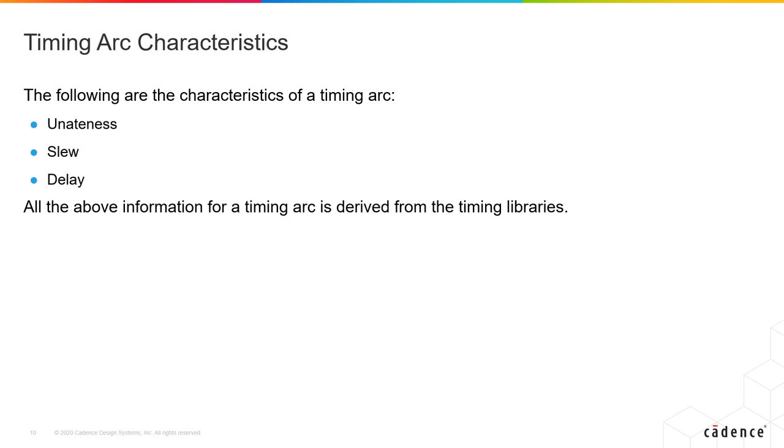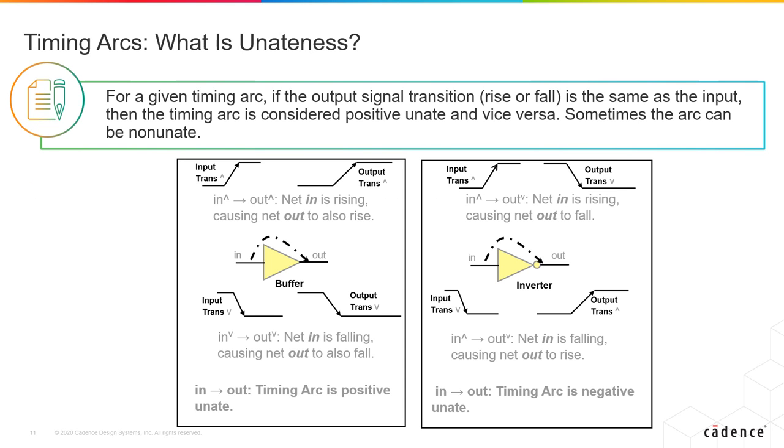Let's look at what each of these means and what is their purpose. U-nateness is a very important property of all timing arcs. Static timing analysis uses u-nateness extensively to determine how the timing information is calculated.